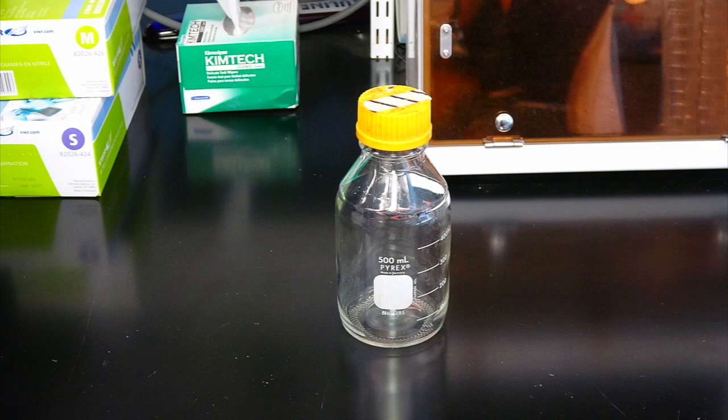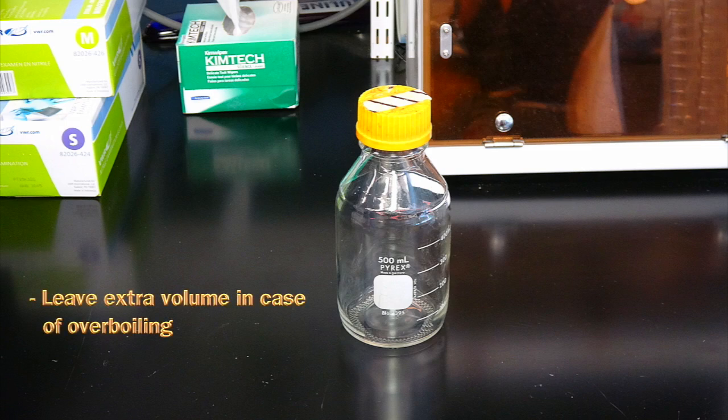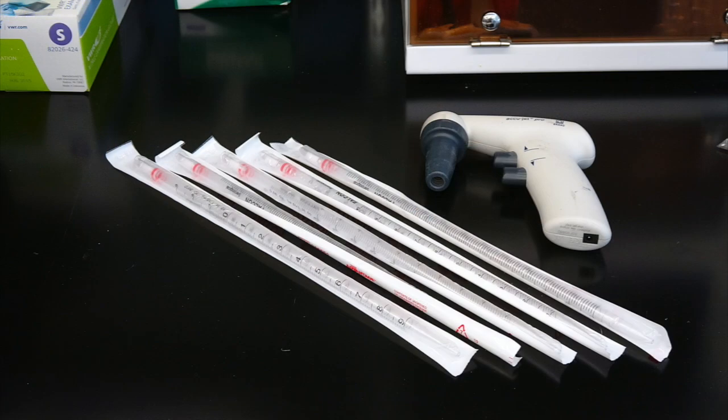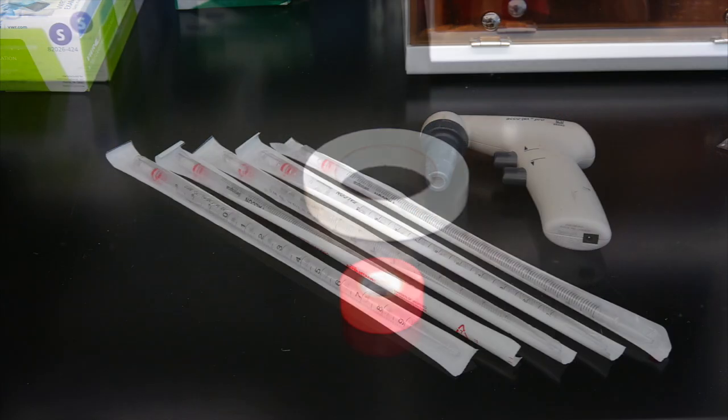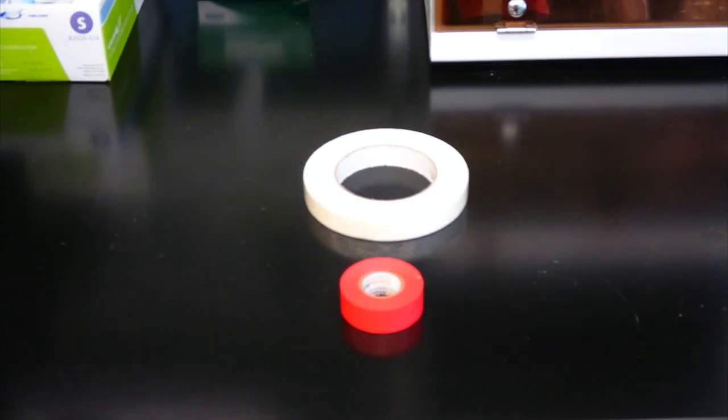Next comes our glassware and disposables. We will make the 220 ml of molten LB agar in a 500 ml bottle. Your bottle should always have plenty of extra volume so your LB agar doesn't boil over in the autoclave. We will use the sterile pipettes to aliquot the gel mix. Finally, we'll use the autoclave tape to label our bottle.